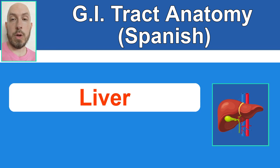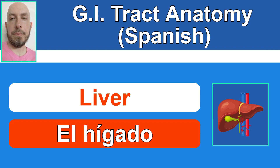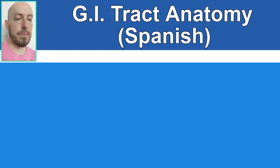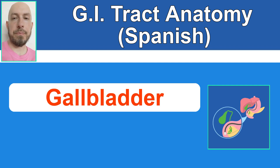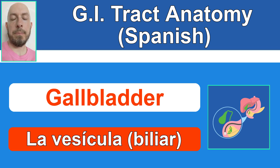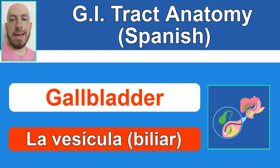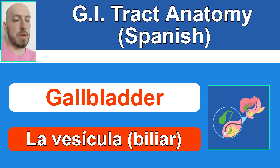Liver: El hígado. El hígado. Gallbladder: La vesícula. La vesícula biliar. Optionally you can add 'biliar' to make it especially clear and specific, but you should be fine with just 'vesícula.'